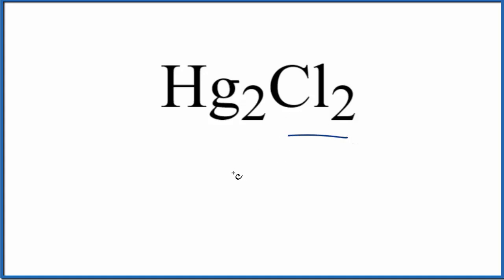Chlorine, that's a non-metal. So we have a metal and a non-metal. We'll name this as an ionic compound. Let's first write the name for Hg, as it appears on the periodic table. That's mercury.